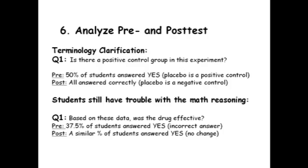I don't know what you're going to do next, but could you explain what a positive control would be in that experiment? And also, I don't know what reasoning you're supposed to use to figure out whether the drug is effective. It's very simple mathematics — you just do the fraction of working versus not working in each group. The fraction is very similar, so it's not effective. Some students do the math right but still conclude wrong.